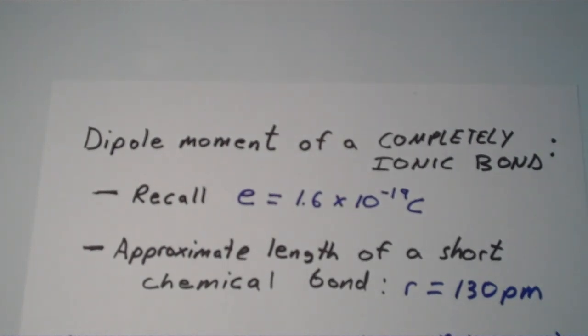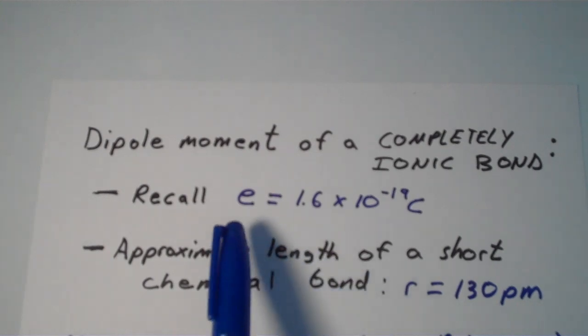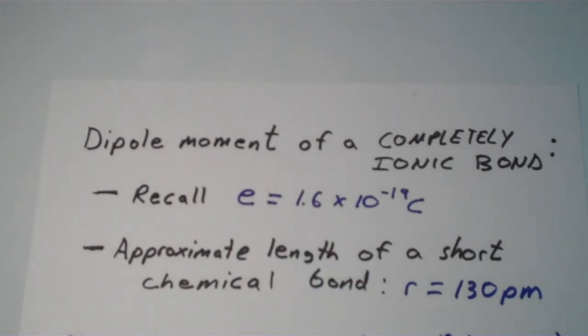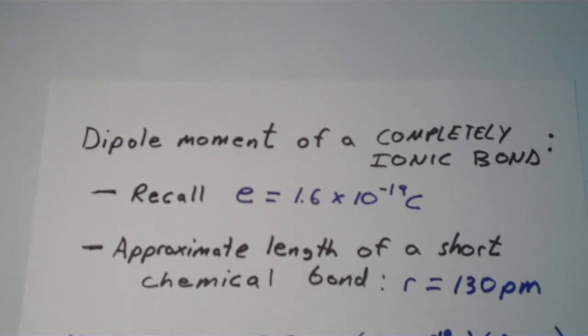If you remember, the charge of a proton and the charge of an electron are 1.6 times 10 to the negative 19 coulombs. That is what we call the elementary charge, which is usually denoted E. The electron has negative 1.6 times 10 to the negative 19 coulombs and the proton has positive 1.6 times 10 to the negative 19 coulombs.